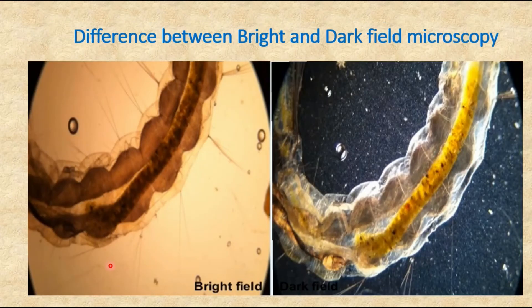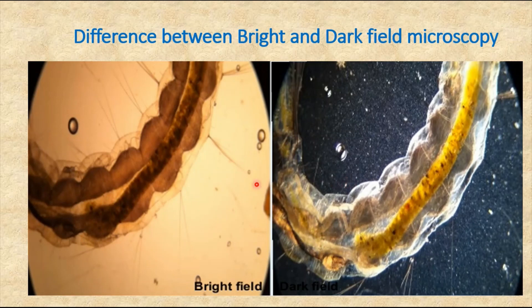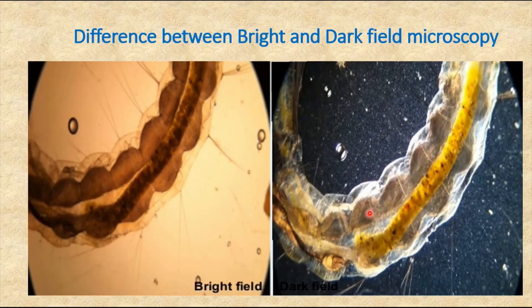Here you can see the difference between the two types of images: in the bright field microscope image, the background is bright and the objects are darker. In the dark field microscope, the background is darker and the image is brightly illuminated. Both pictures are shown for comparison. This is all about the dark field microscope. In the next video, we are going to learn about the phase contrast microscope.